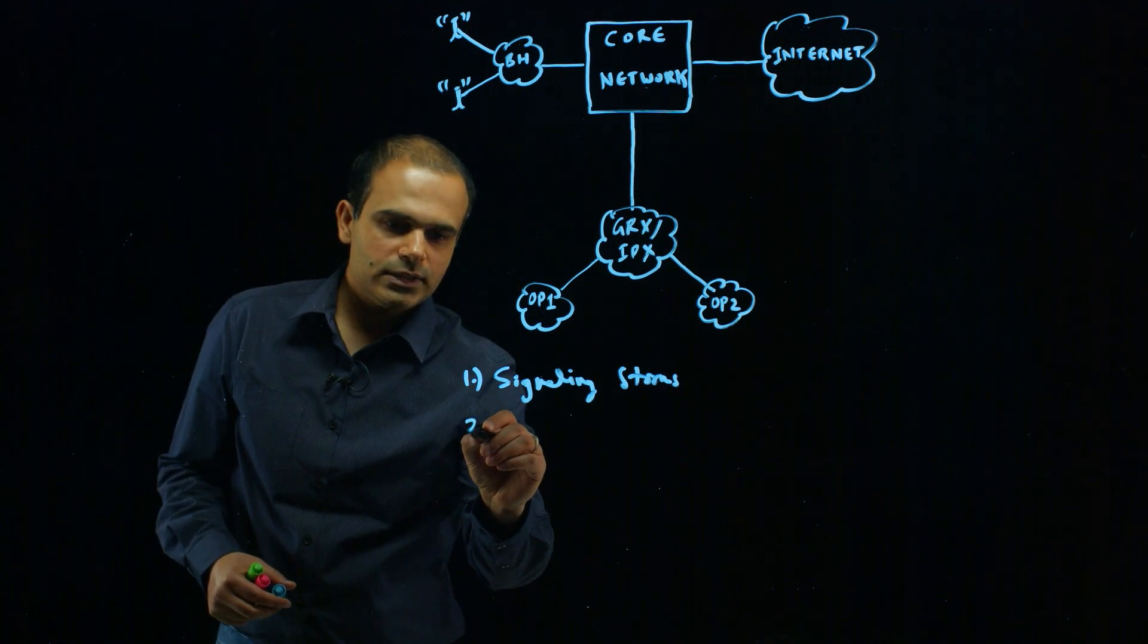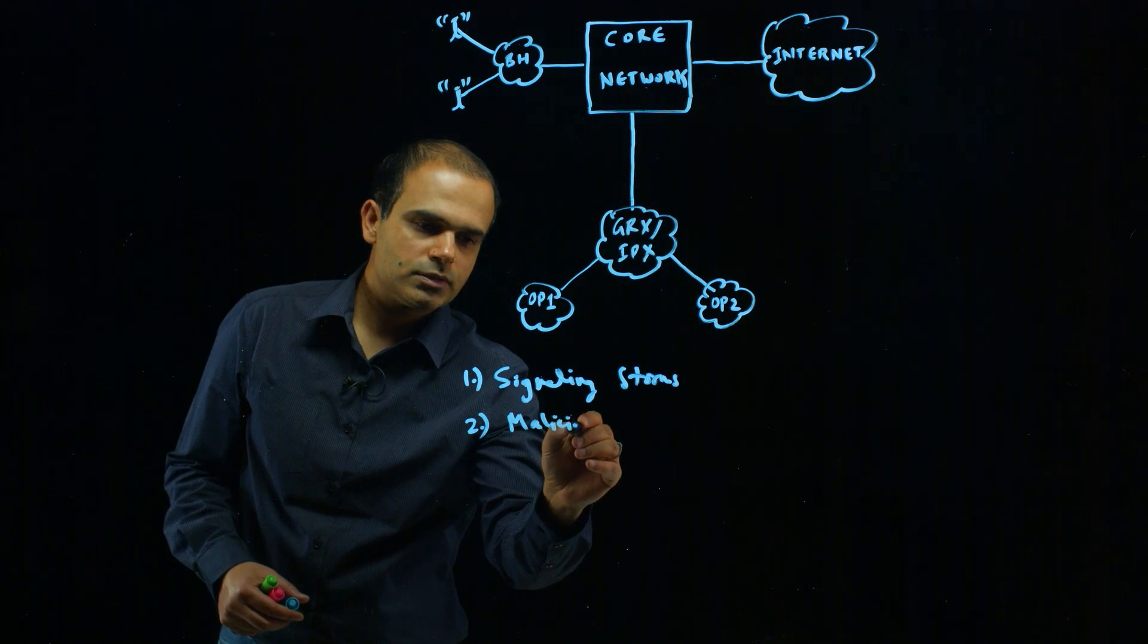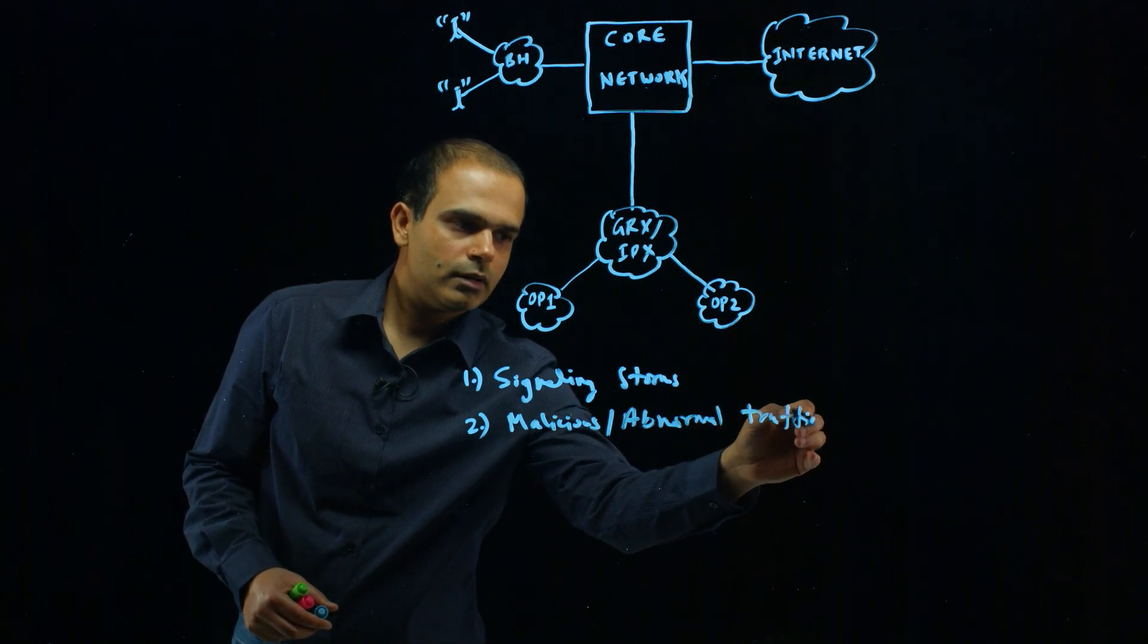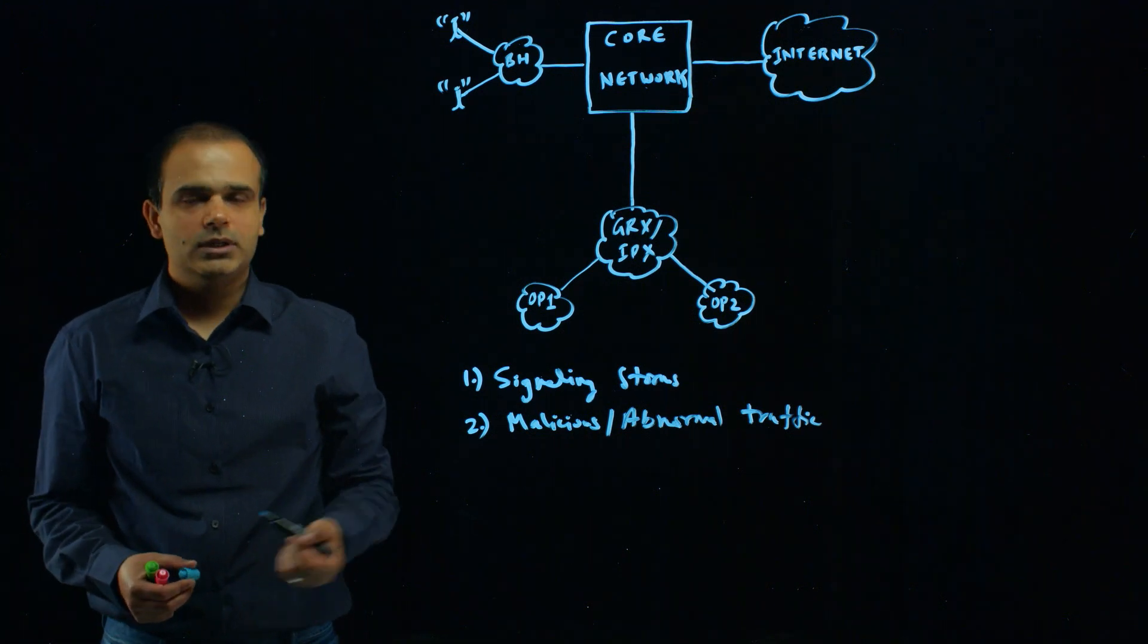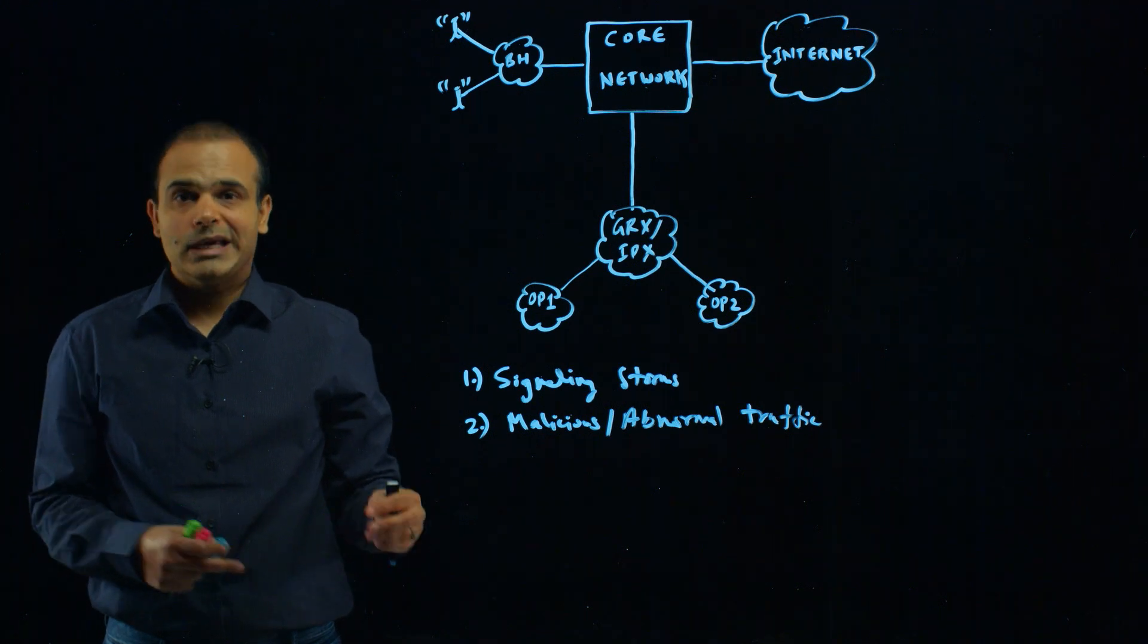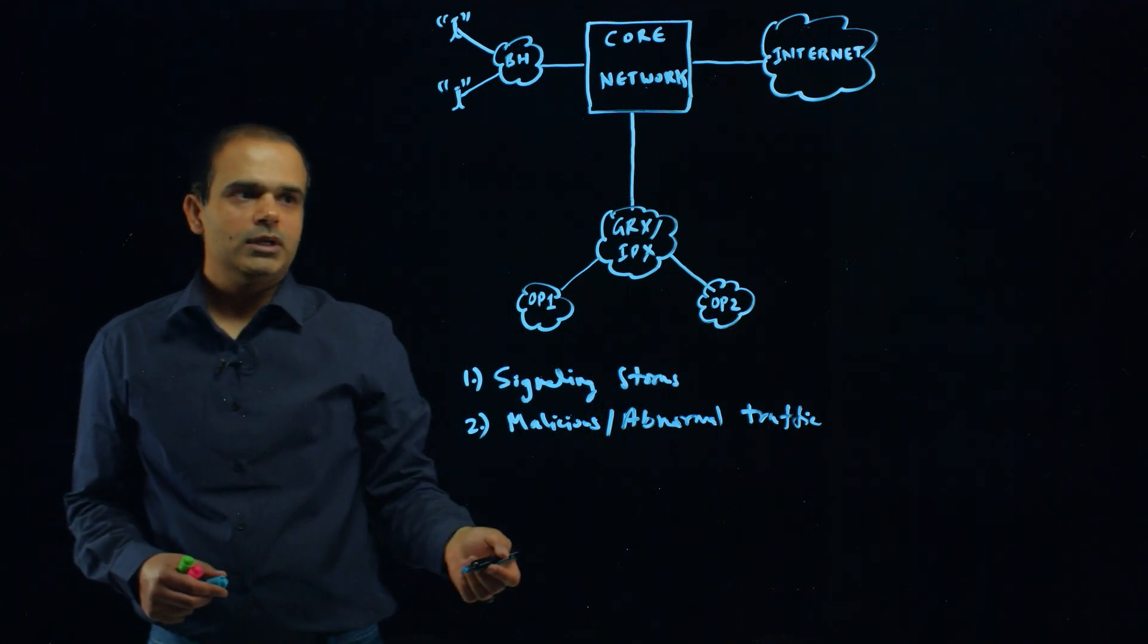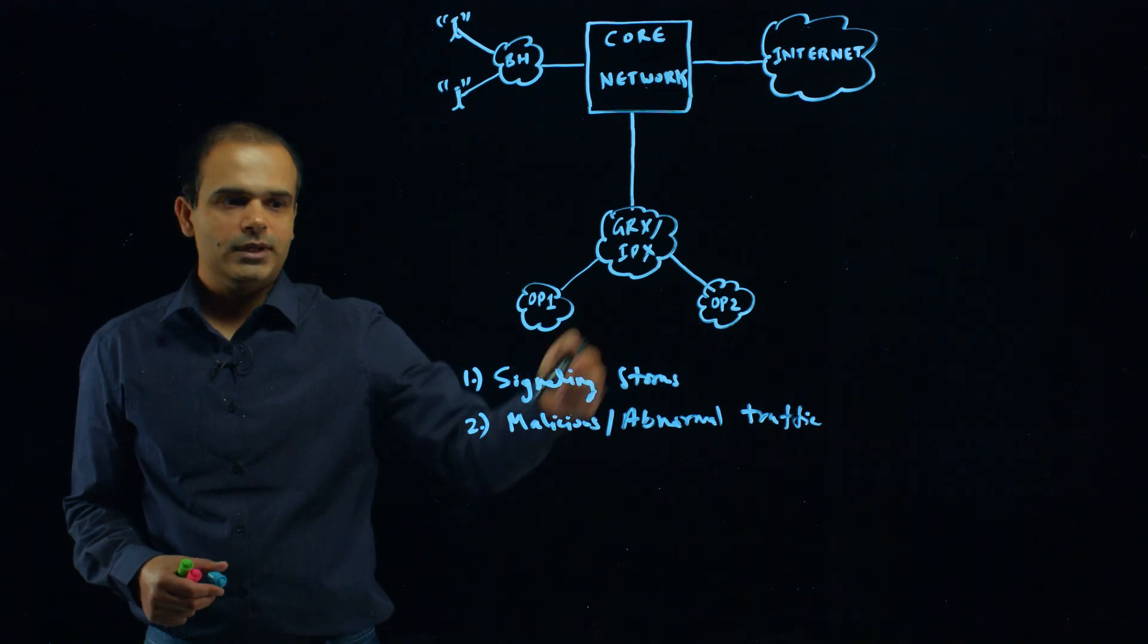The second type of threat is malicious or abnormal traffic. This can be signaling traffic or data traffic. This abnormal traffic can come from the partner operator, in this case operator one, operator two, or it can be from a malicious attacker which has access to the IPX GRX network.